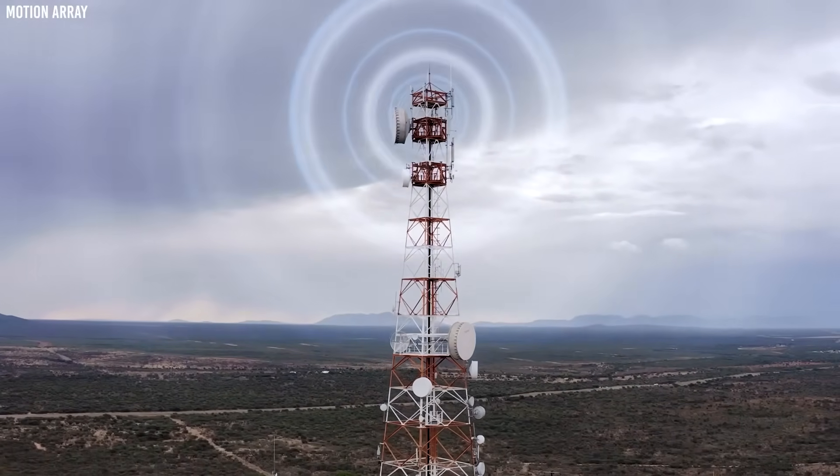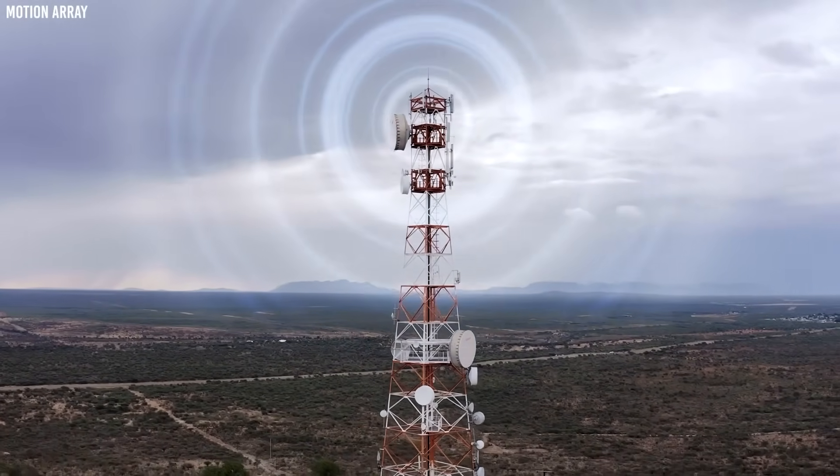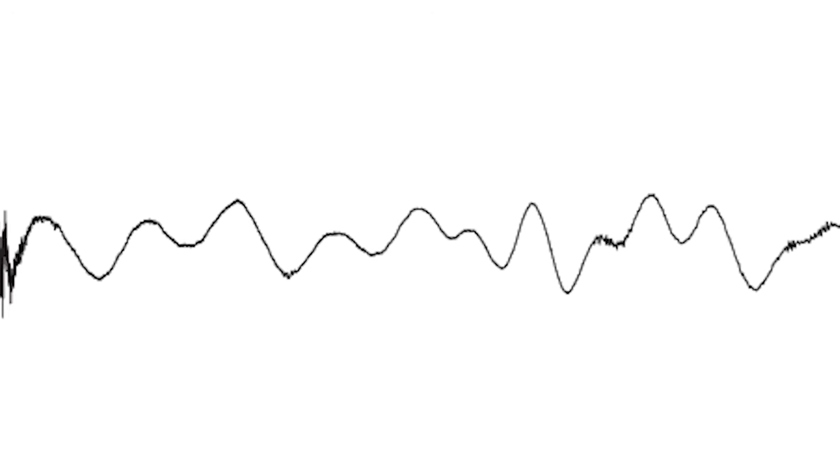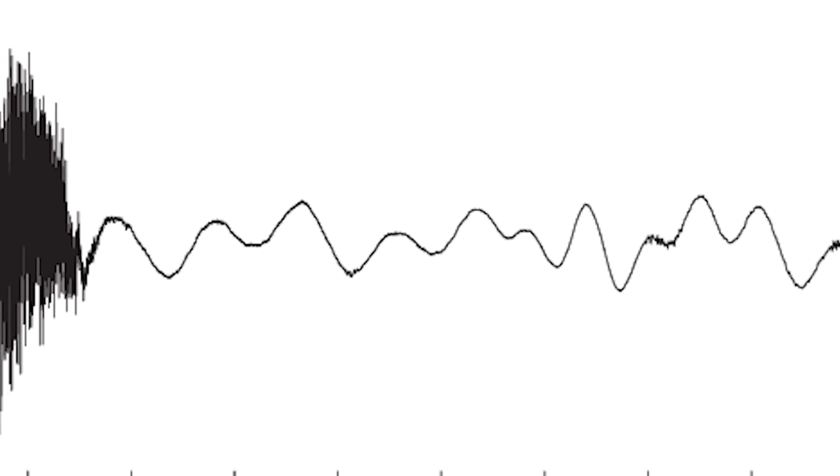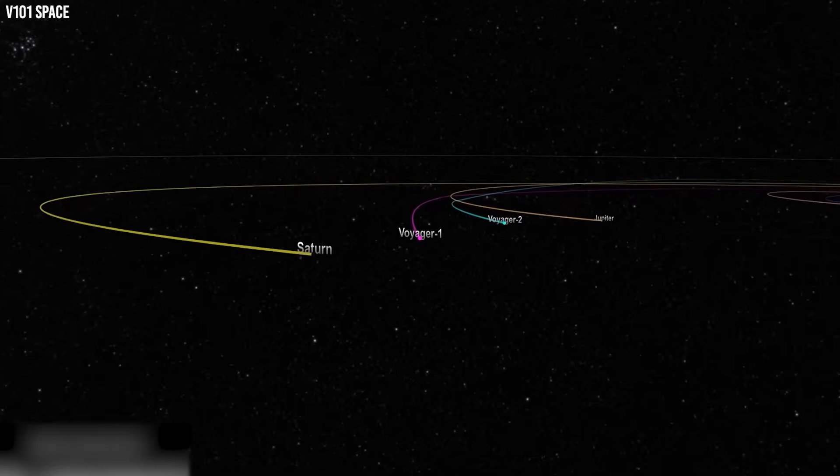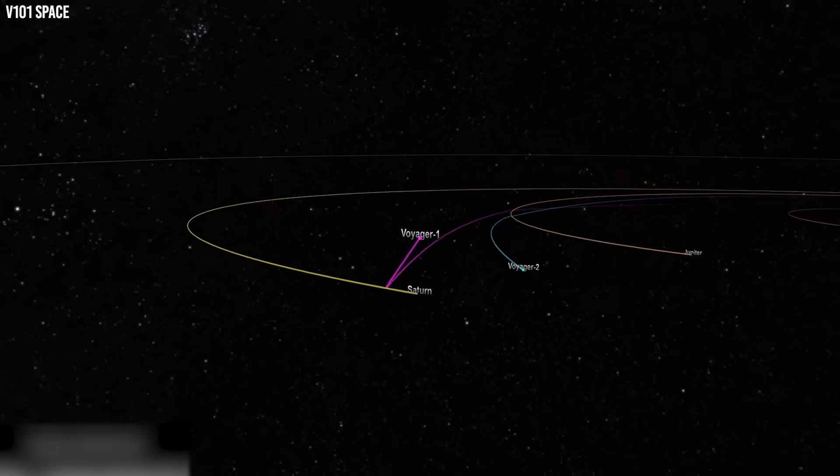These devices convert heat released by the radioactive decay of plutonium 238 into electrical energy. When the probe launched in 1977, the RTGs produced around 470 watts, enough to light up several household lamps. By 2023, that output had dwindled to nearly half, with a decline of about 4 watts per year.